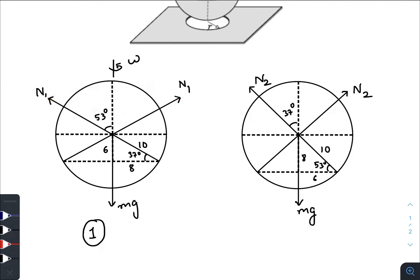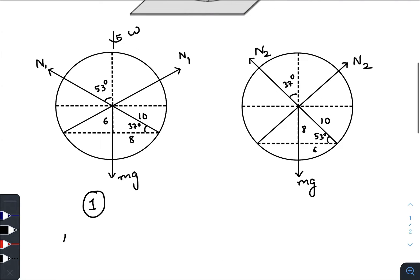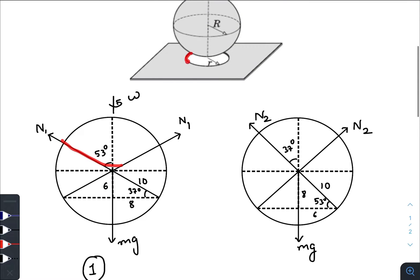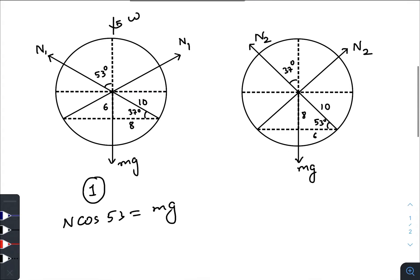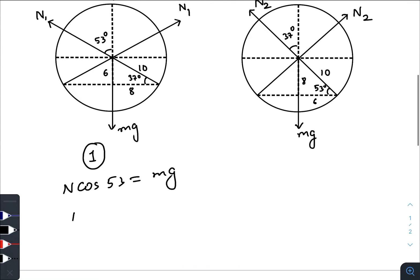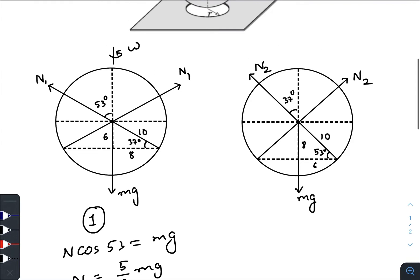So the cos component of the normal is balanced by the weight in the vertical direction. So net force due to the normal applied by this surface on the sphere will be balanced by the gravitational force. So we have 5/3 mg.